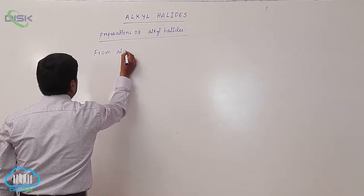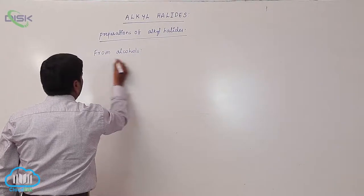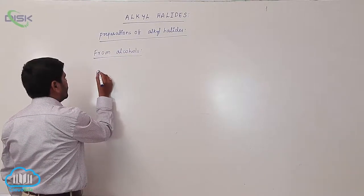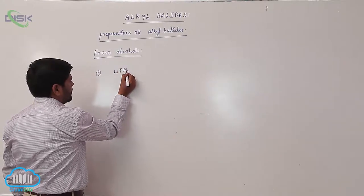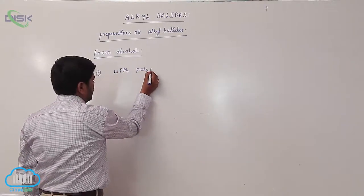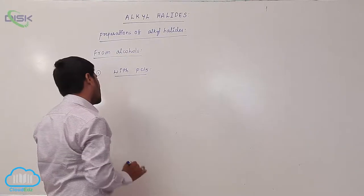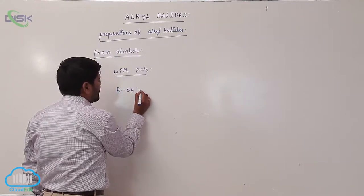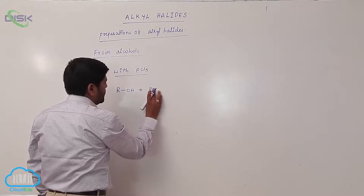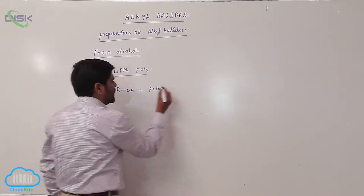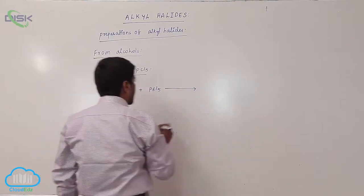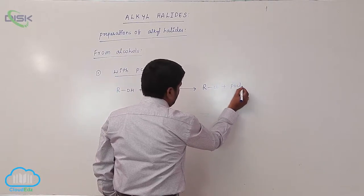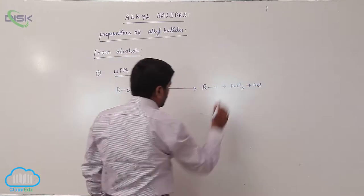From alcohols, number one: with phosphorus pentachloride. An alcohol reacts with phosphorus pentachloride to form an alkyl chloride, with POCl₃ and hydrochloric acid also produced.